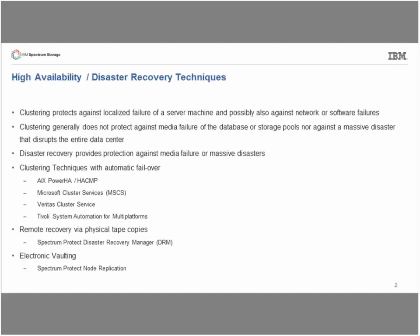The way we deal with localized failures is clustering. Approved clustering techniques for Spectrum Protect include PowerHA (formerly HACMP) in the AIX world, Microsoft Cluster Services on Windows, Veritas Clustering Services on a few platforms, and System Automation for Multi-platform. When we talk about DR, we need to recover our Spectrum Protect server in an alternate location — that's where Disaster Recovery Manager comes in, primarily a tool for recovery with physical tape. Beyond that we talk about electronic vaulting, and a key technique is Spectrum Protect's node replication capability.